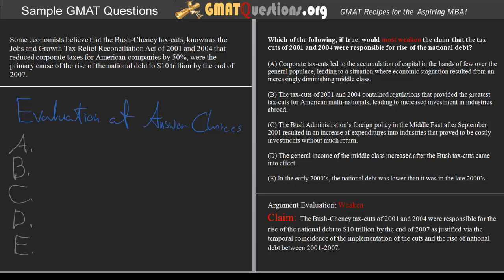A: Corporate tax cuts led to the accumulation of capital in the hands of few over the general populace, leading to a situation where economic stagnation resulted from an increasingly diminishing middle class. What we get here is the idea that the tax cuts, after having been implemented, led to the concentration of capital in the hands of few over many, and this concentration of capital led to economic stagnation. Does that weaken the claim that the tax cuts are responsible for the rise of the national debt? Obviously not — it actually lends substantial support to that claim, whereas we're trying to weaken it. So we can go ahead and mark A as incorrect.